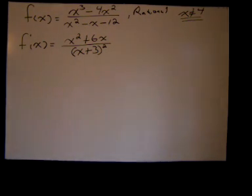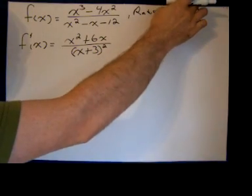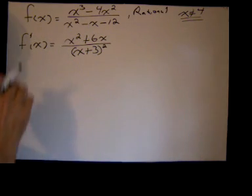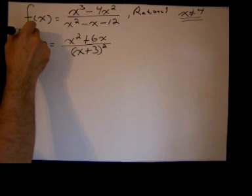Good morning, we're going to continue with the second derivative of the rational function x cubed minus 4x squared over x squared minus x minus 12. I'm probably going to keep this statement up here that x cannot equal 4 for the original function because that's going to come in important later.